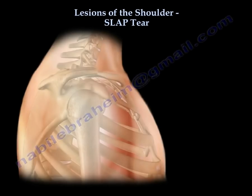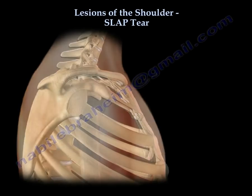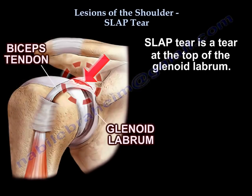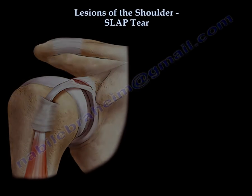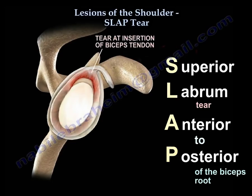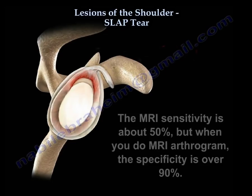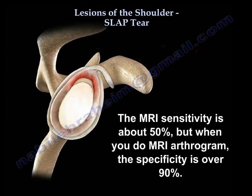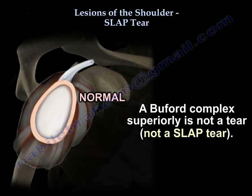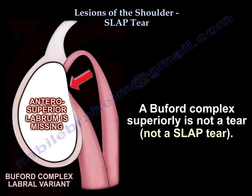Lesions of the shoulder: SLAP tear. It is a tear at the top of the labrum. SLAP means Superior Labral tear Anterior to Posterior, at the biceps root. The MRI sensitivity is about 50%, but with MRI arthrogram the specificity is over 90%. The Buford complex superiorly is not a tear — it is not a SLAP tear.